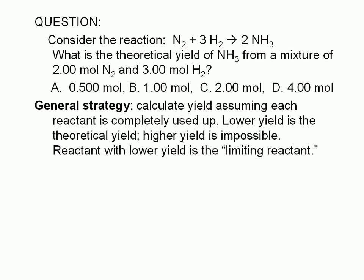The general strategy for solving this type of problem is to calculate the product yield assuming each reactant is completely used up. The lower yield is the theoretical yield, and the higher yield is impossible.